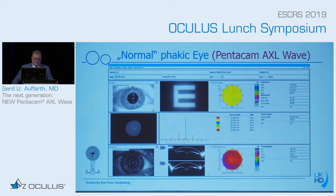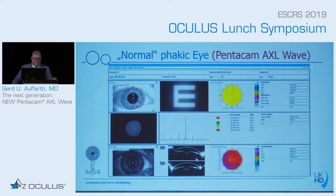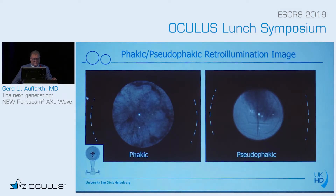This is what a normal phakic eye looks like on the device. What you get is the refraction, the wavefront, the axial length, the tomography, and the retroillumination photos. So with one single view, you can see almost everything you need for a cataract or refractive patient.